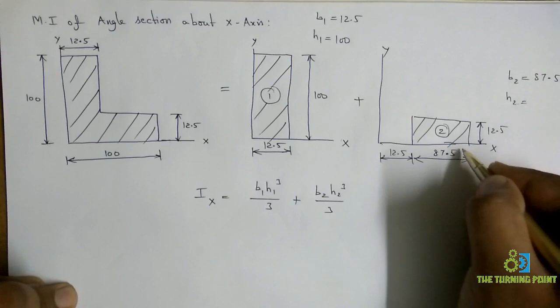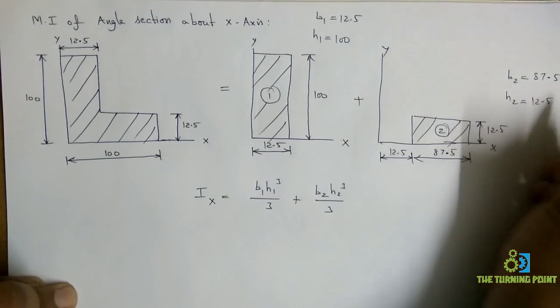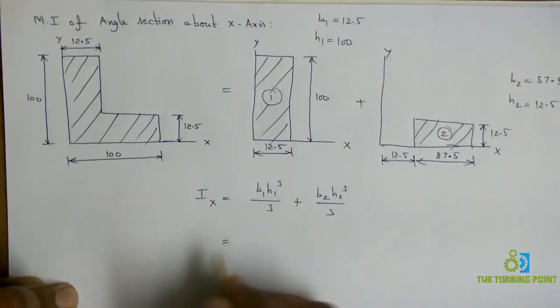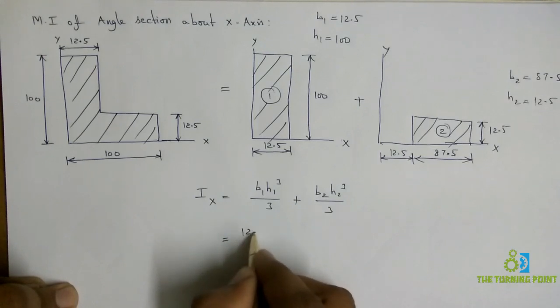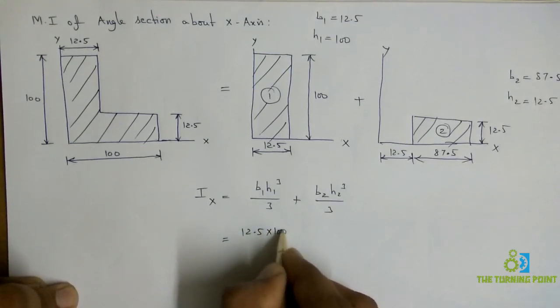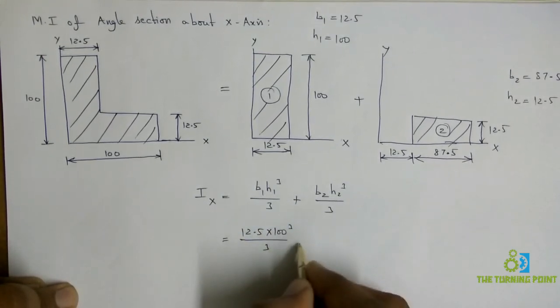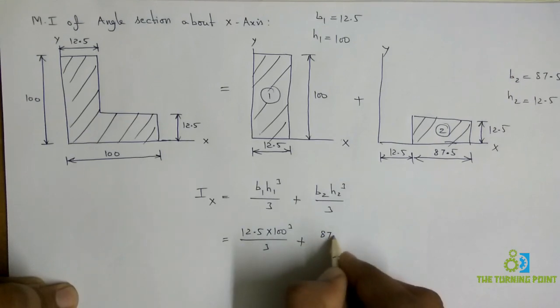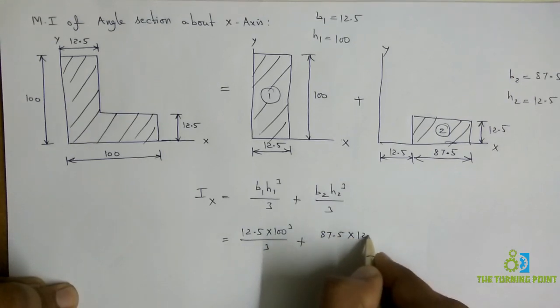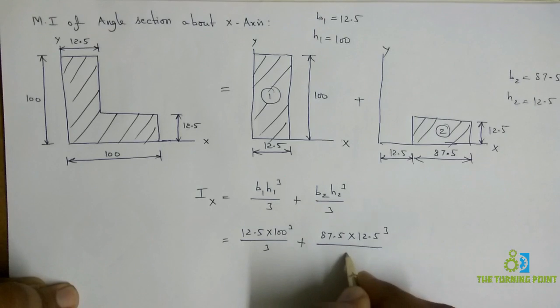Height of the second rectangle is 12.5. Just substitute these values and calculate it. This is 12.5 into 100 cube divided by 3, plus 87.5 into 12.5 cube divided by 3.